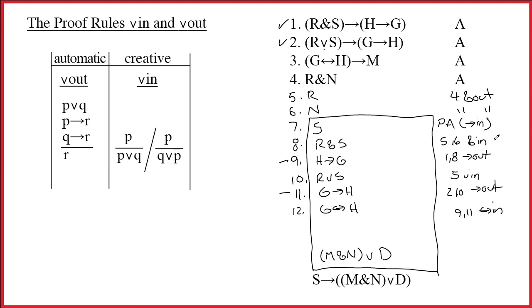Notice that in this proof I did ampersand in, wedge in, and double arrow in. I've used all three of my creative rules, and I did it for the same purposes. To build the antecedent of these three conditionals so that I could do arrow out. Well, I still need to do this last arrow out, and so I get to write M on line 13. And that, of course, will be 3, 12, arrow out.